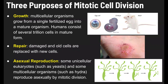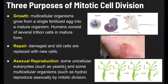Some unicellular eukaryotes, such as yeasts — which you might use when you bake bread — and some multicellular organisms, such as hydra, reproduce asexually by mitotic division. The hydra is a microscopic organism that lives in water. You start with just one hydra, but a little bud comes off of it, and that bud continues to grow until eventually you have two fully formed hydra. That process where new cells are being formed through mitotic division is a form of reproduction — you start with one hydra and end with two, achieved through asexual reproduction.